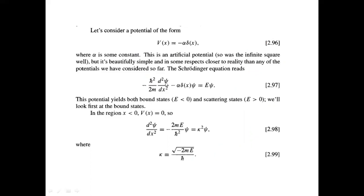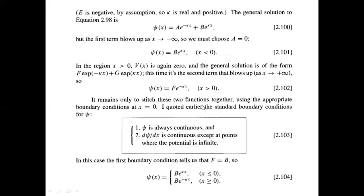We write the Schrödinger equation and solve for bound states where E is less than zero. When E is greater than zero we have scattering states, but here we focus on E less than zero. In the region x less than zero, V(x) becomes zero, so the Schrödinger equation reduces to a simplified form by substituting the expression for kappa.